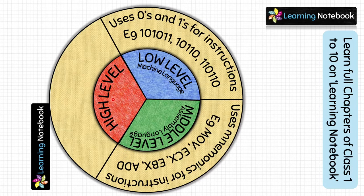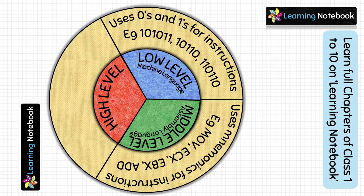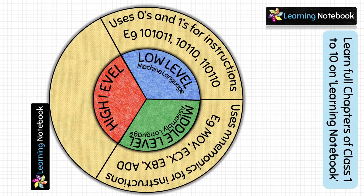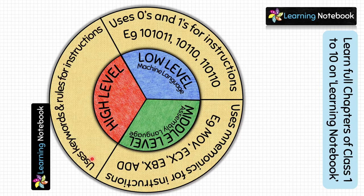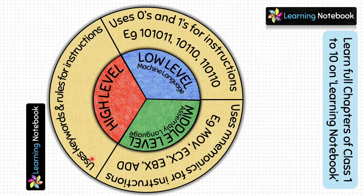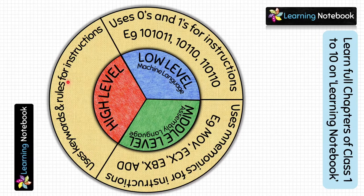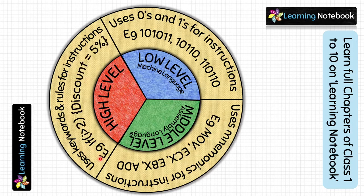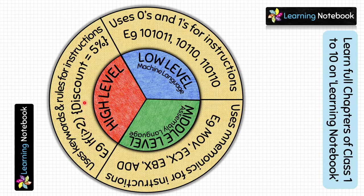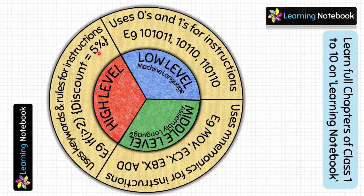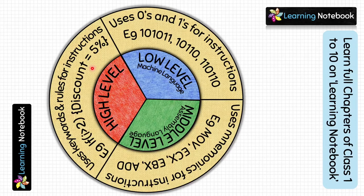Next, write about high level language. This language overcomes all the difficulties of low level and middle level language. Programming is done in a language closer to human language, so programs written in high level language are easy to understand. This language uses keywords as well as rules for instructions. For example: if i is greater than 2 then discount equals to 5 percent.